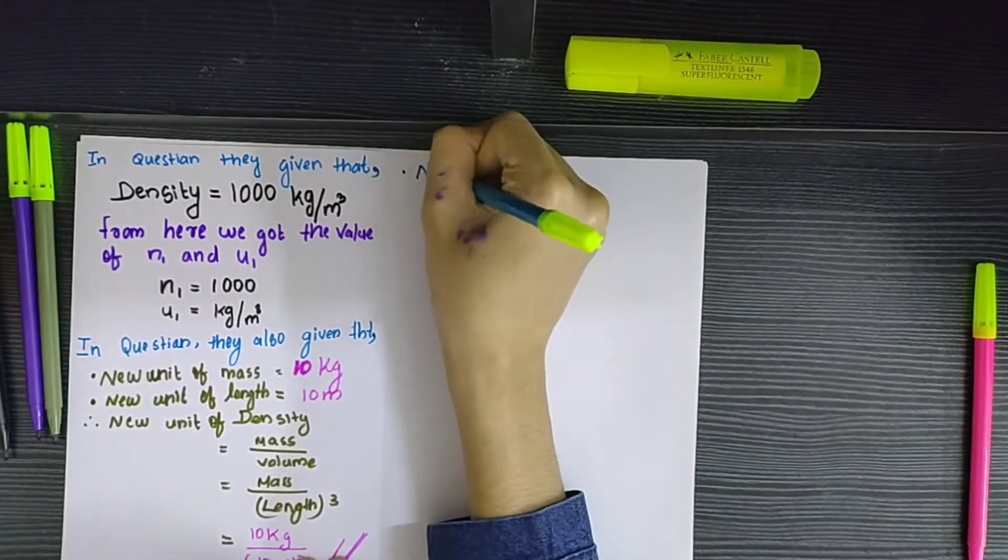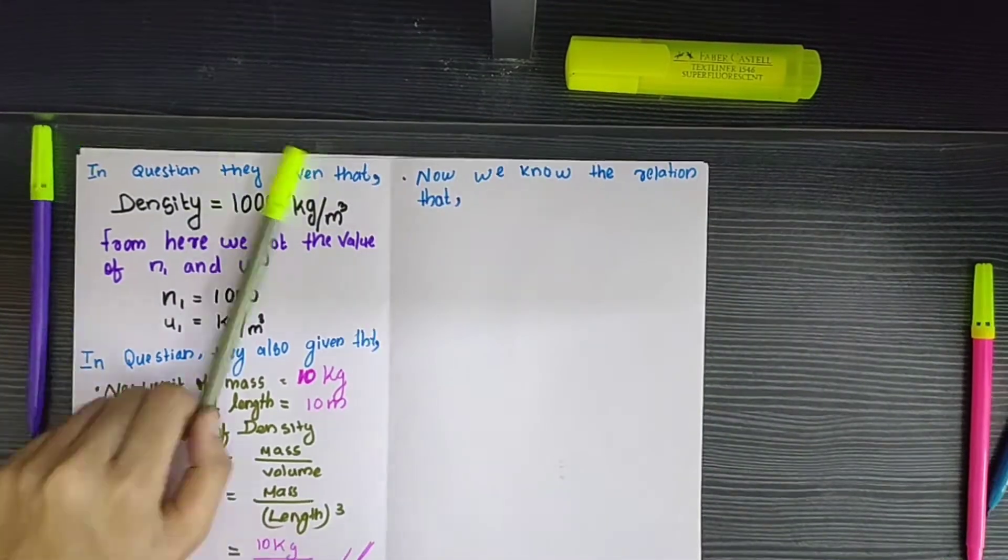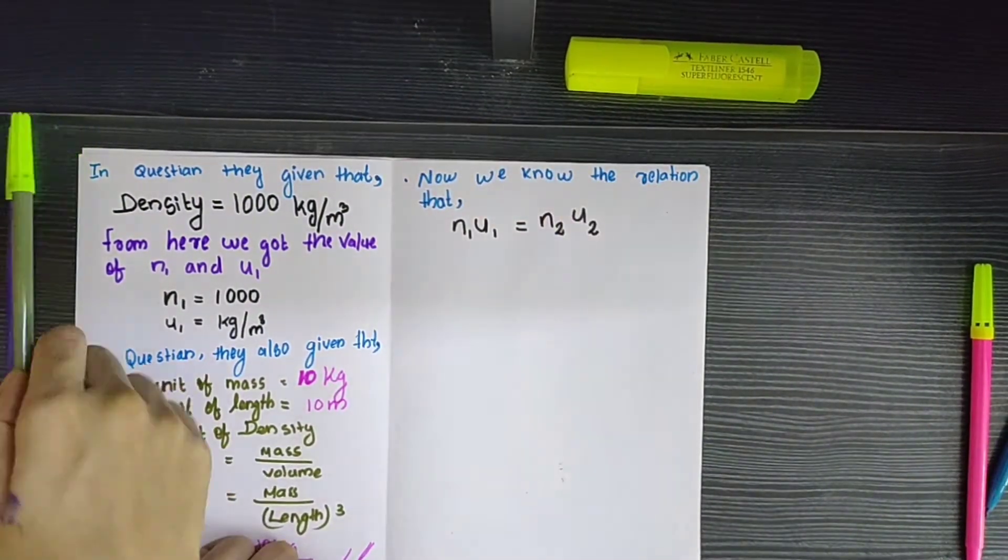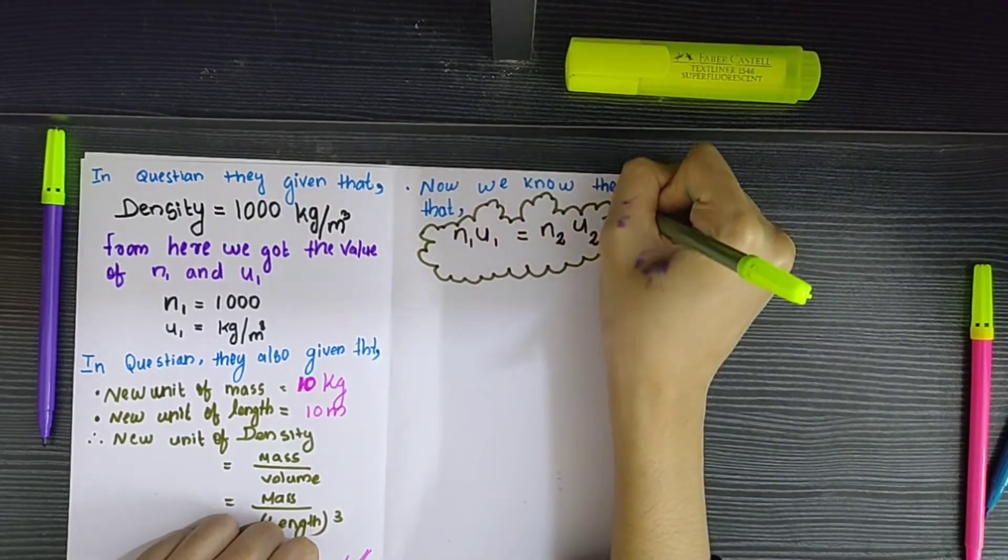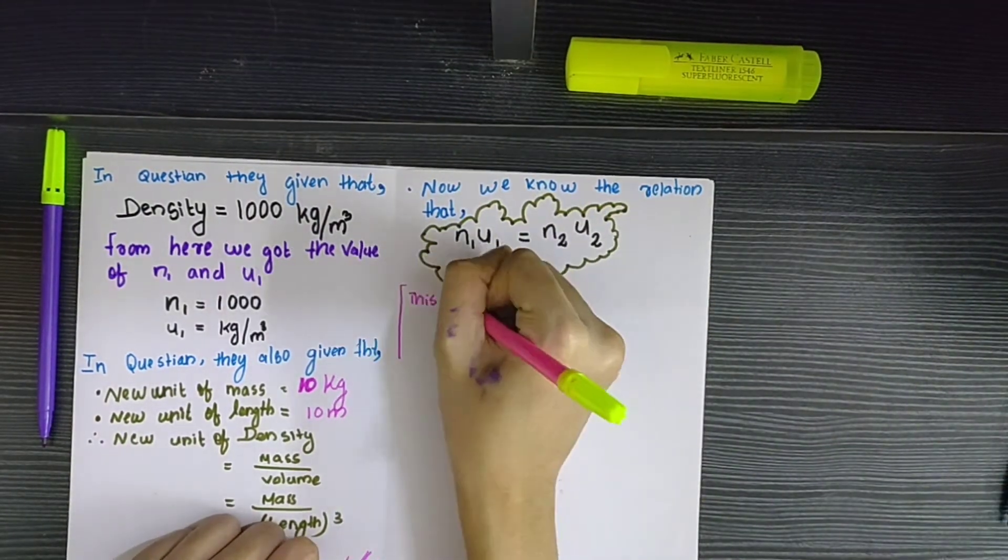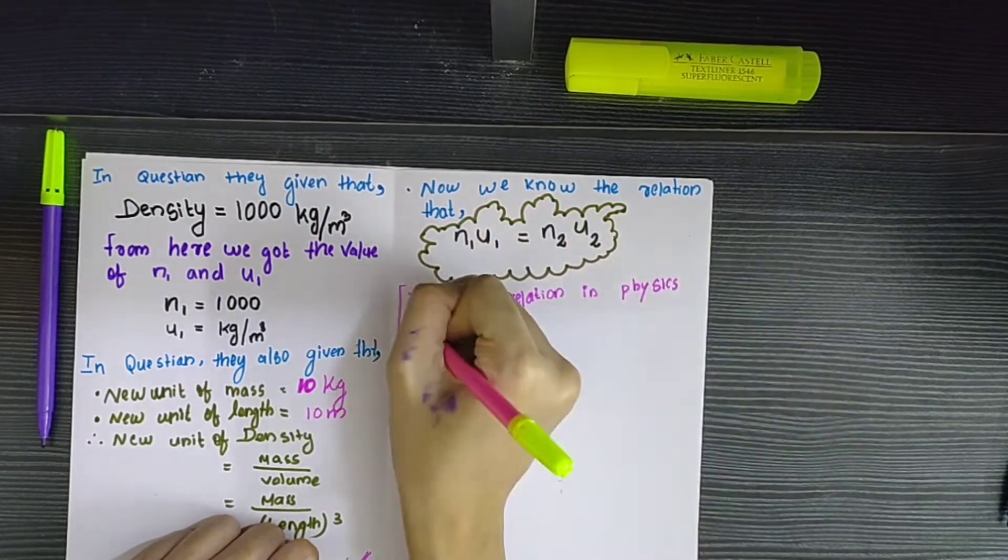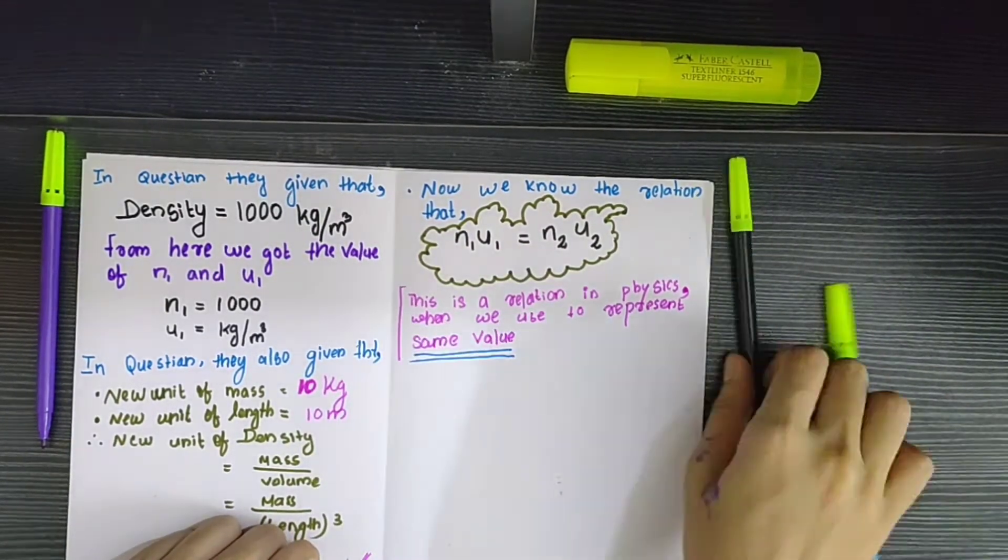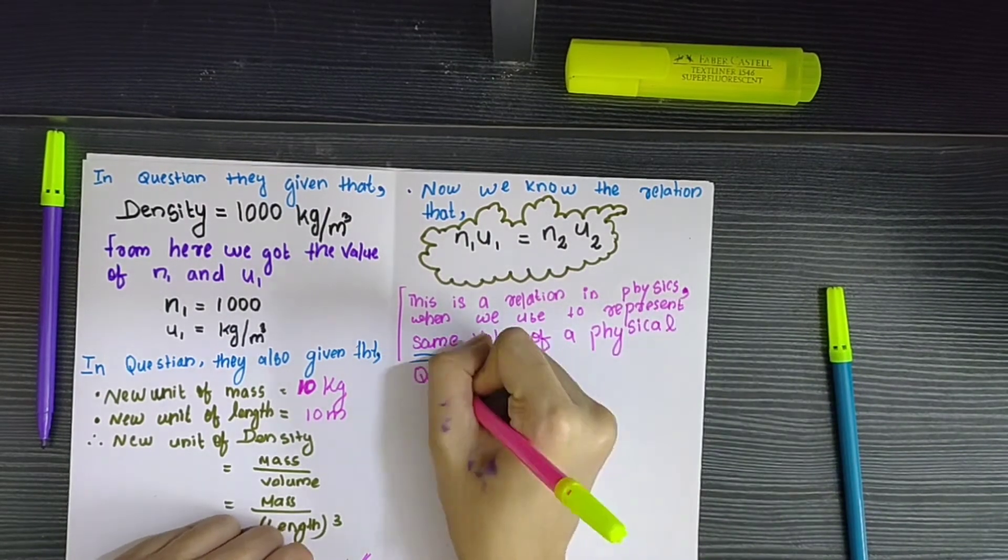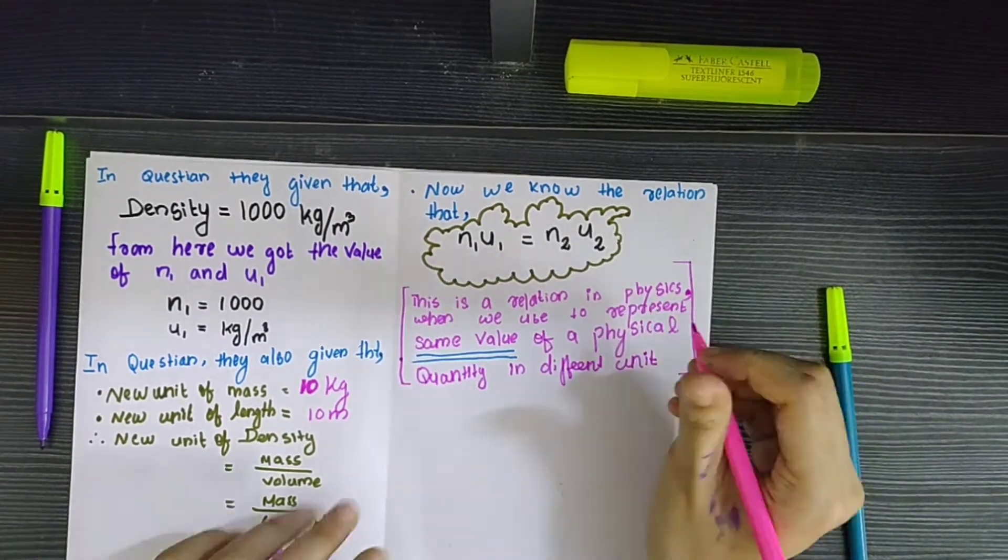Now we know the relation that n1·u1 is equal to n2·u2. If you are wondering which equation this is, this is a relation in physics, especially we study this in the chapter Units and Measurement when we used to represent the same value of a physical quantity in different units. This is really important.